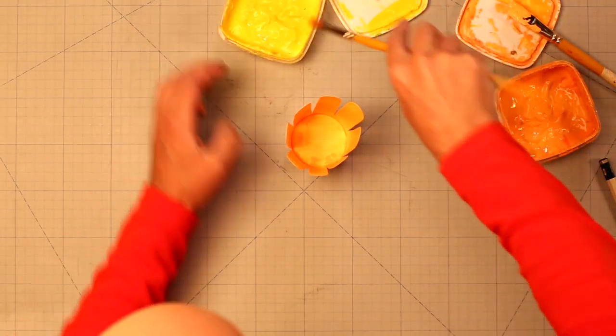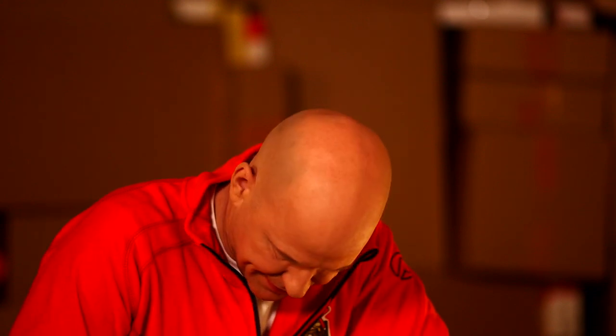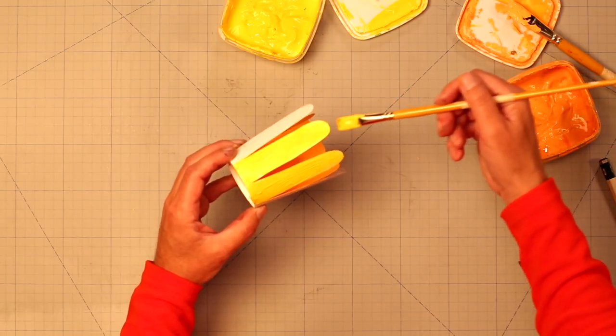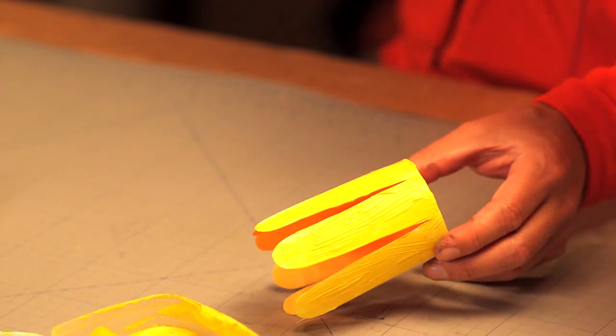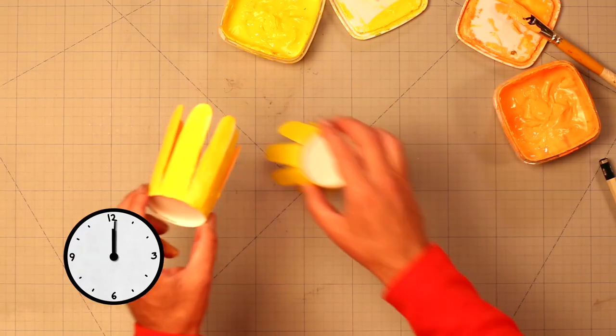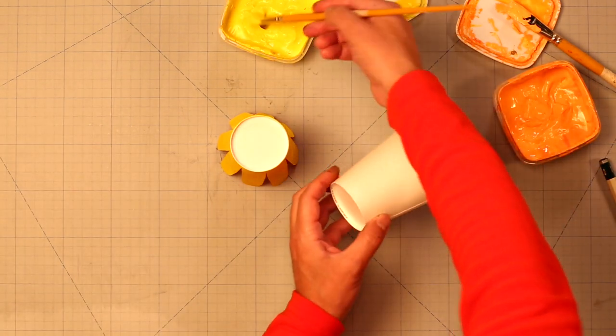We continue with yellow on the outside. Then I bring in another one that's already dry. Next we paint one more paper cup.